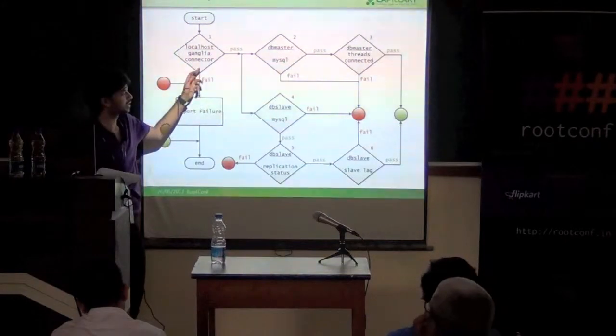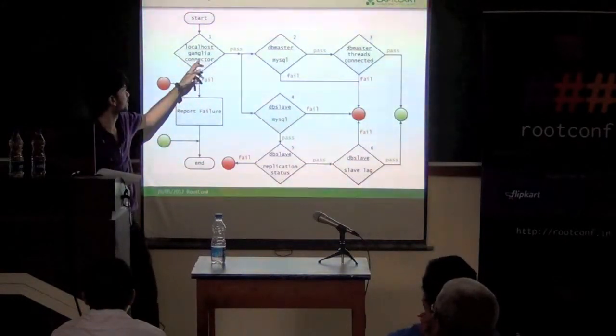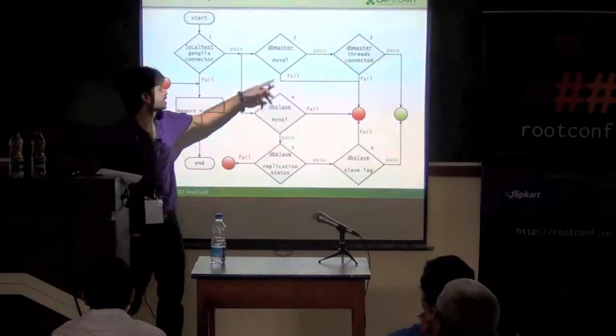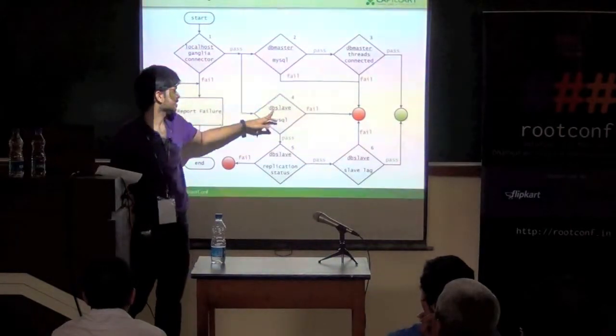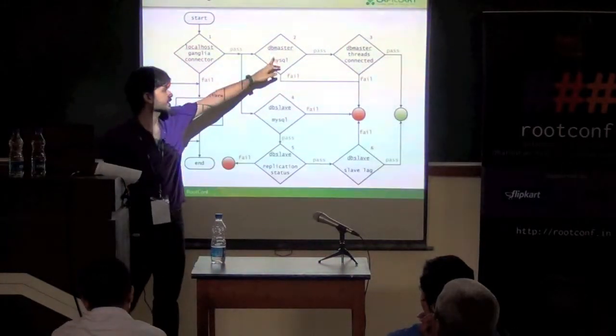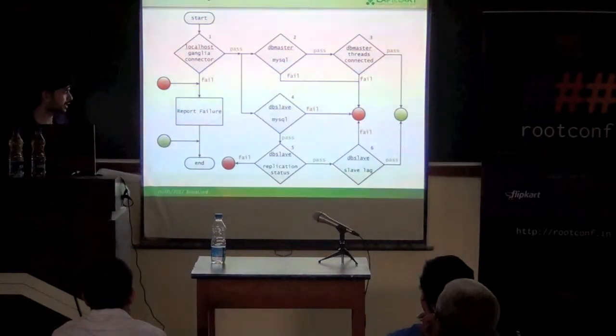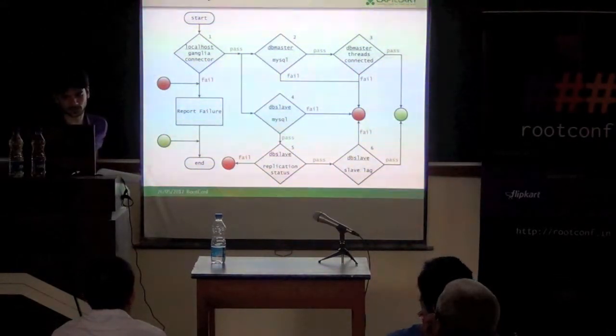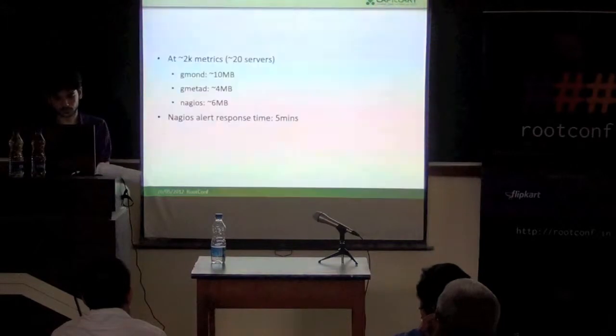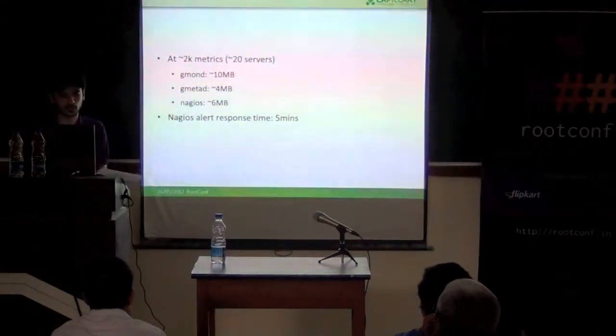In all these cases, the base error gets thrown whenever an error happens. This gets thrown when this happens. This gets thrown before that. This gets thrown before that. And whenever these errors happen, those errors won't be reported. So we get an idea of the root cause.